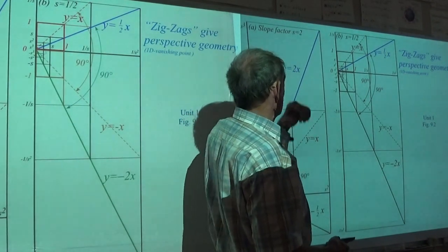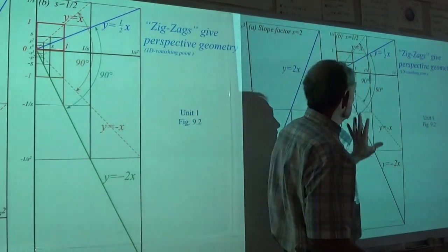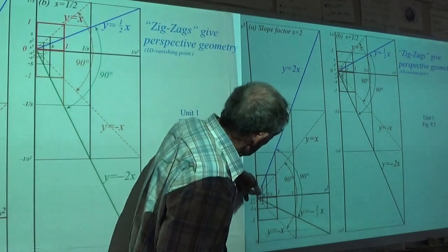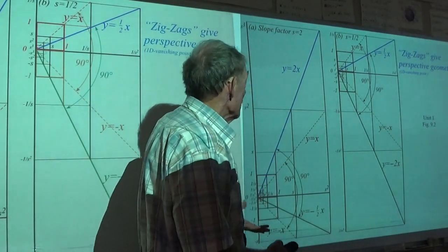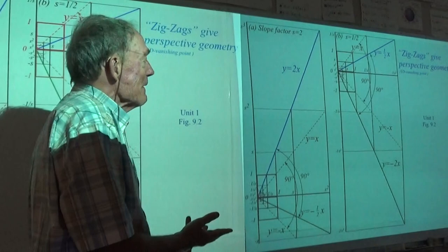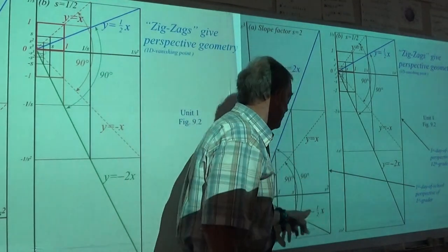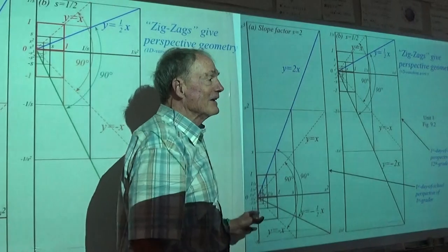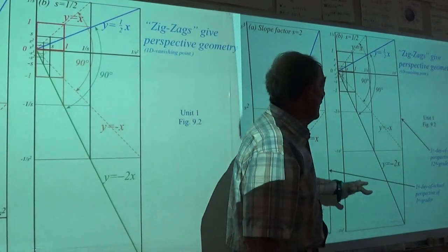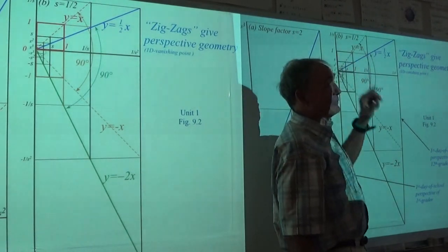Here's a thing with a slope factor s equal to 2, which really goes fast. Here's one with one half. I'm taking these things not just up here but also zigzagging down here and finishing them with various lines. This is a perspective view of a hallway. I like to joke that this is the first day of school perspective of a first grader — you're little and here's this big hallway. But as a high school student, maybe over six feet tall, the hall seems small. It's just a matter of the scale factor for the perspective. We're going to see this perspective business show up in the diagrams of phase space of oscillators.